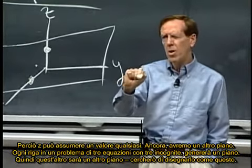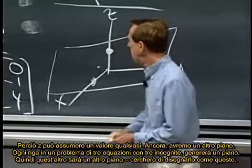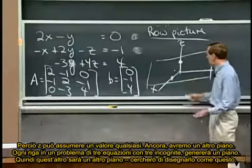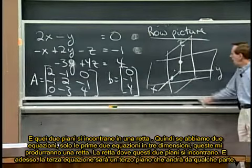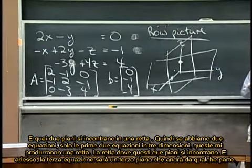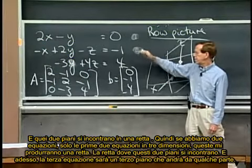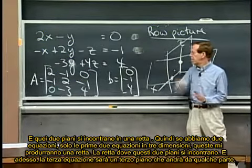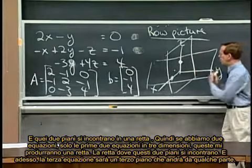Each row in a three by three problem gives us a plane in three dimensions. So this one is going to be some other plane, maybe I'll try to draw it like this. And those two planes meet in a line. So if I have two equations, just the first two equations in three dimensions, those give me a line, the line where those two planes meet.